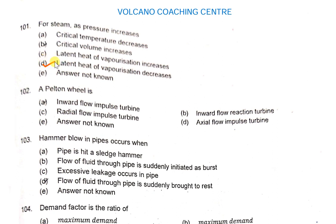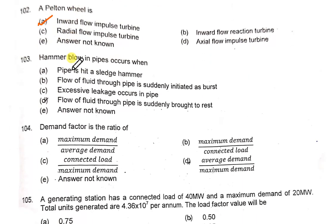A Pelton wheel is an inward flow impulse turbine. Hammer blow in a pipe occurs when the flow of fluid through the pipe is suddenly brought to rest.